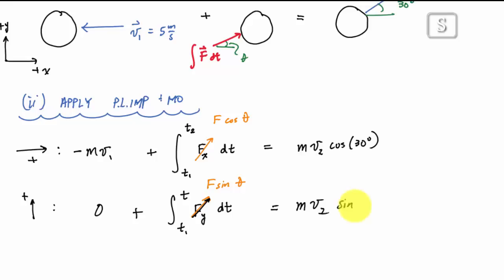Again, it's positive because I'm assuming that it's pointing upwards. This is equal to mv2 sine of 30 degrees. The way I've set this up, I know the mass, I know the velocity at one, I know the mass and the velocity of two. So my only two unknowns are the magnitude of the force and this angle theta.